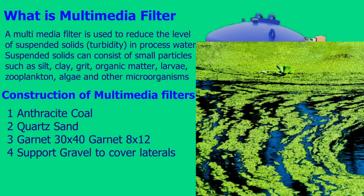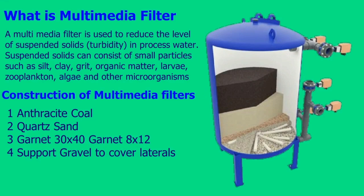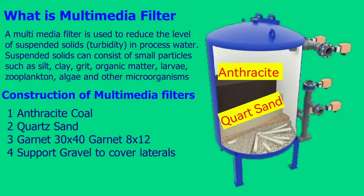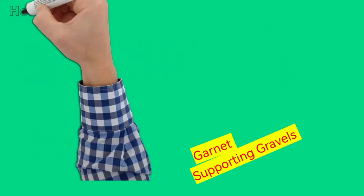Construction of Multimedia Filters. There are four layers in multimedia filters. The top layer is anthracite coal. The second layer is quartz sand. The third layer is garnet. And the fourth layer is supporting gravels.